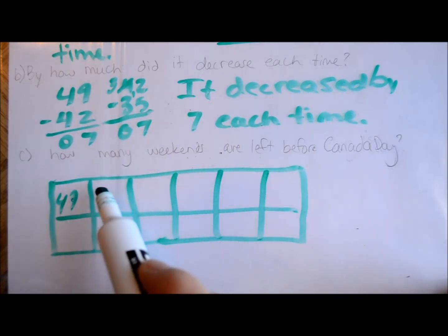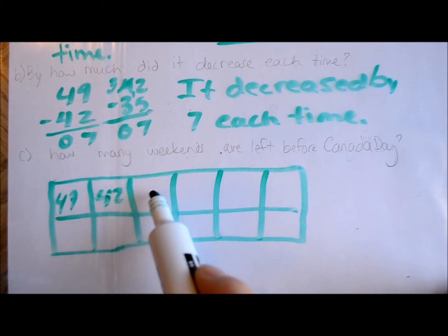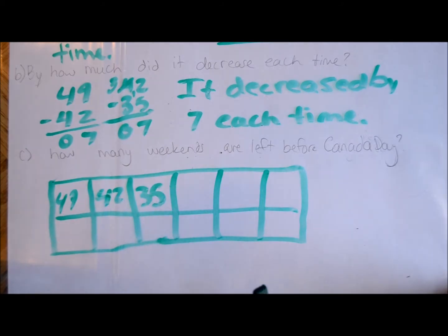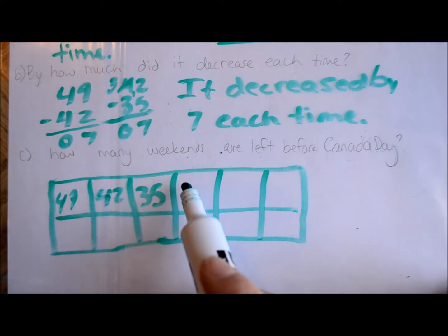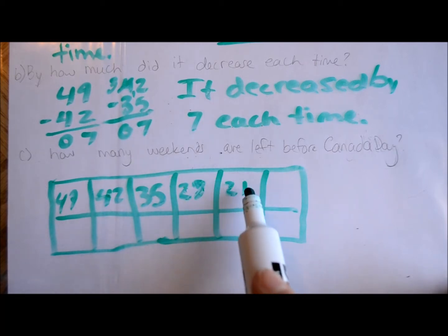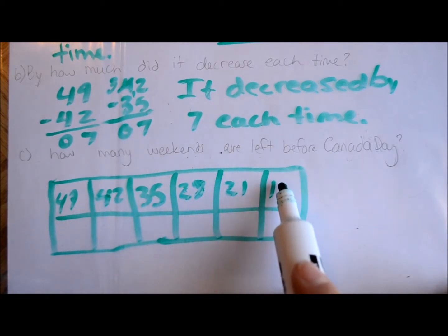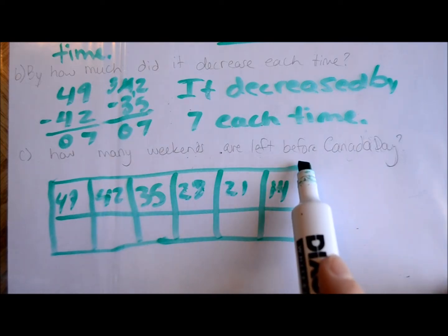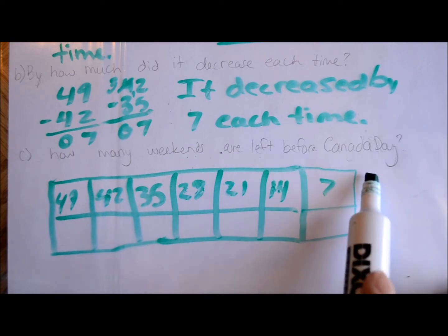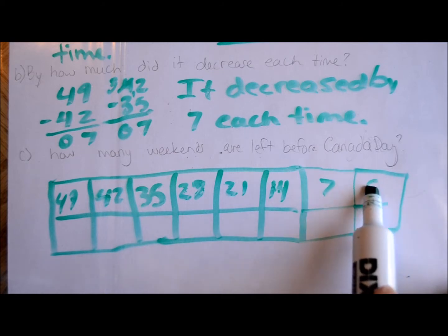My pattern is decreasing by 7 every time. So the chart goes: 49, 42, 35, then 28, 21, 14, 7, and 0. Each step decreases by 7.